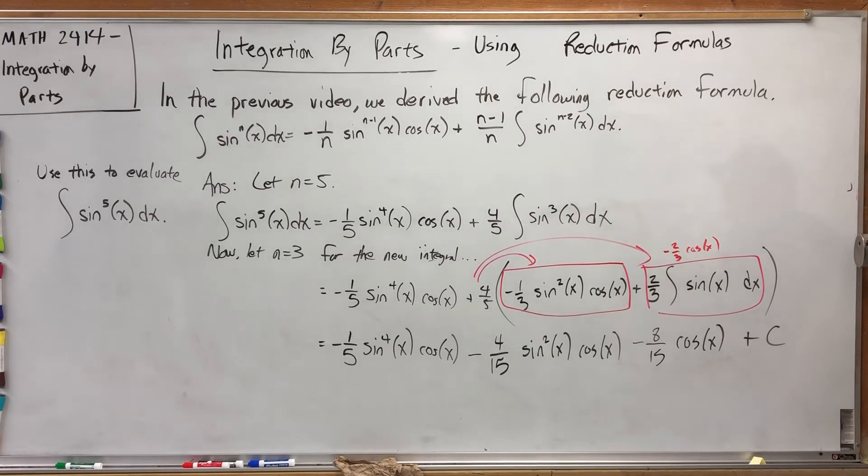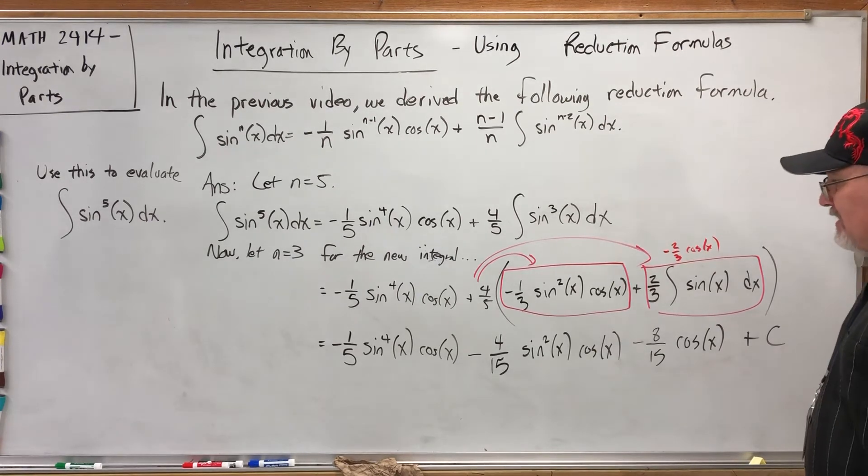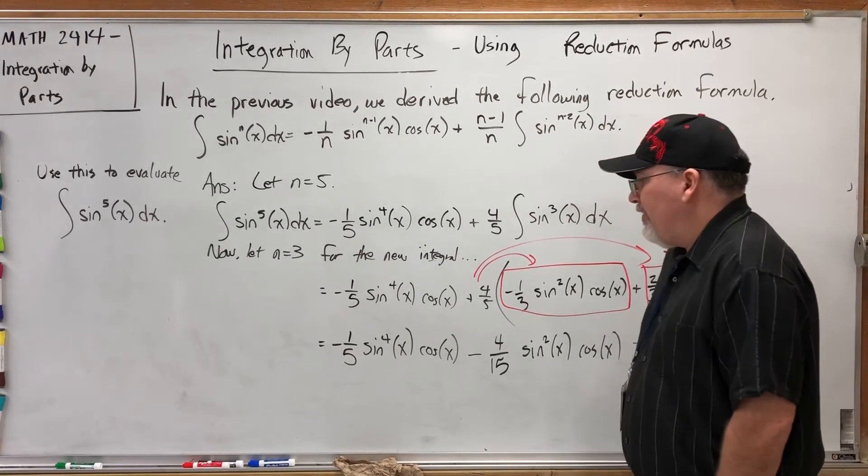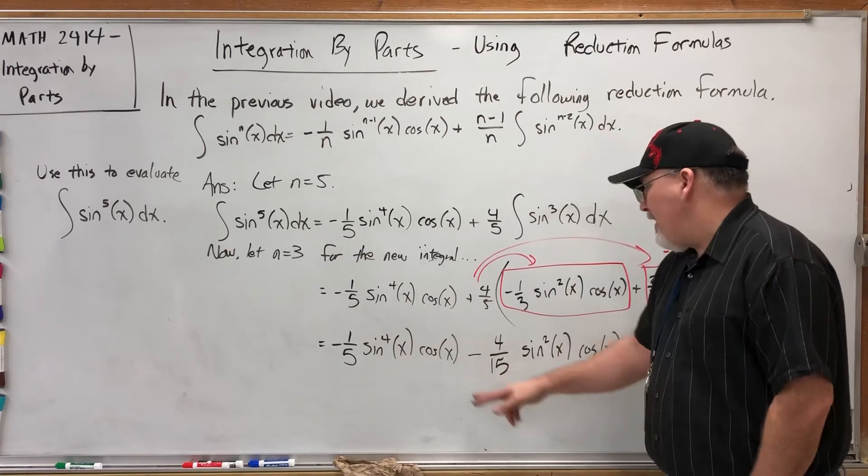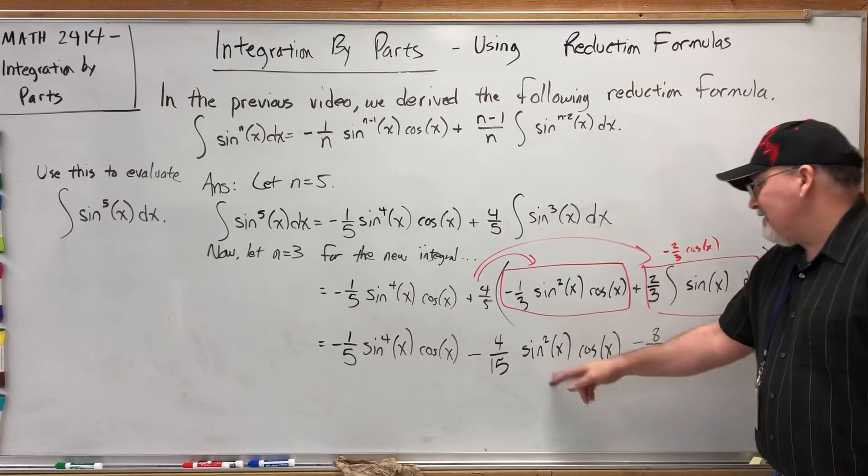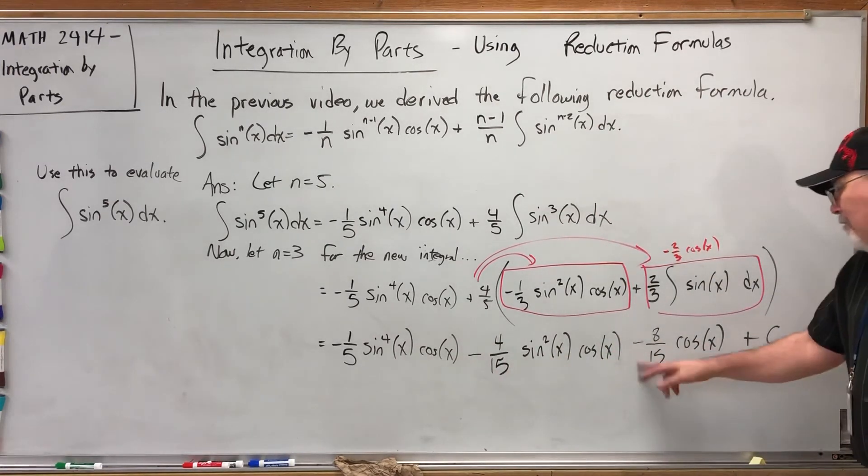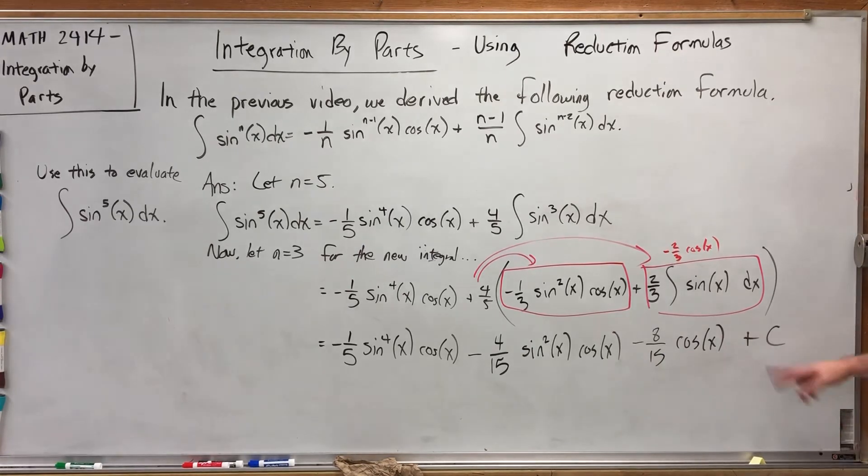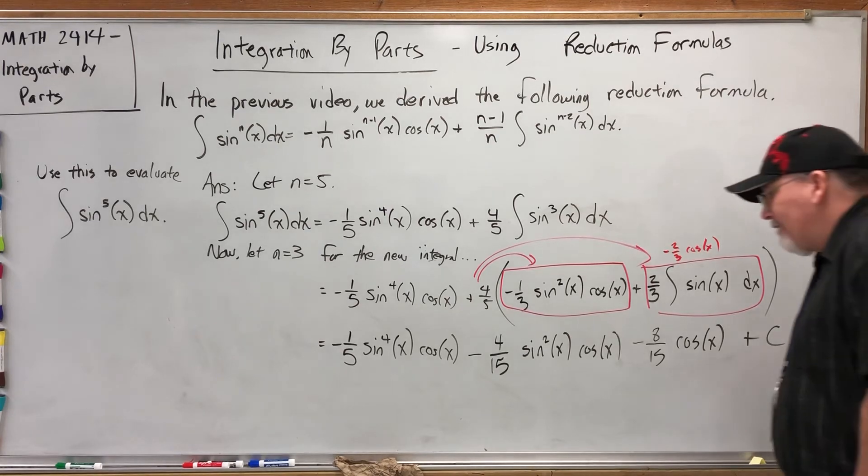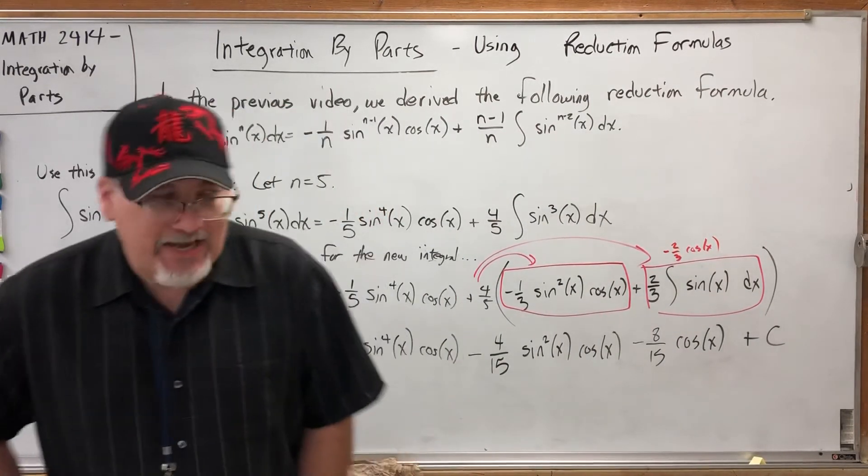The integral of sine to the fifth x dx is negative one-fifth sine to the fourth x cosine x minus four-fifteenths sine squared x cosine x minus eight-fifteenths cosine x plus c. I guess we could get cute and maybe factor out a negative cosine because they all got one, and we could even get cute and factor out a fraction, but I think this is just as good an answer as any.